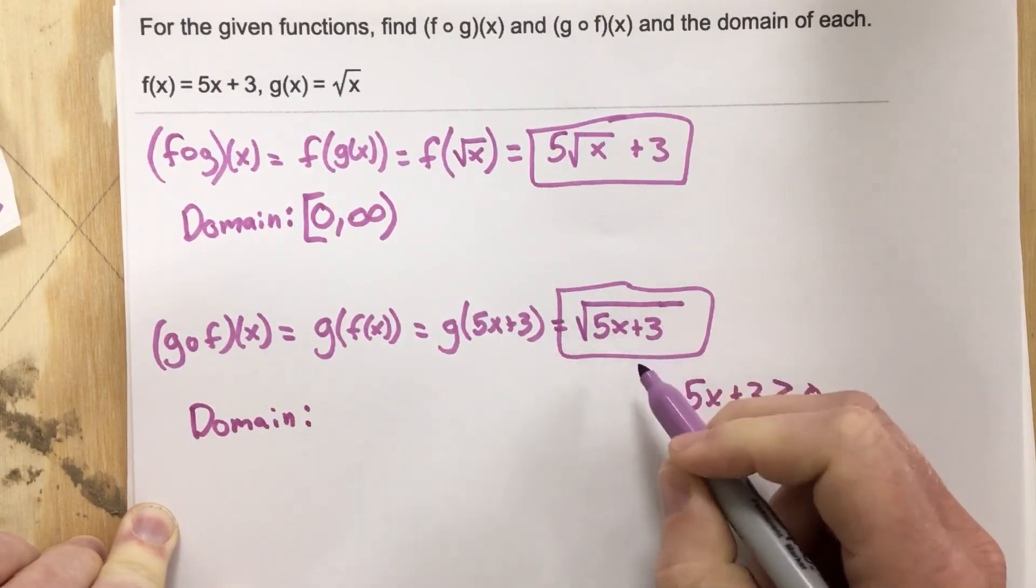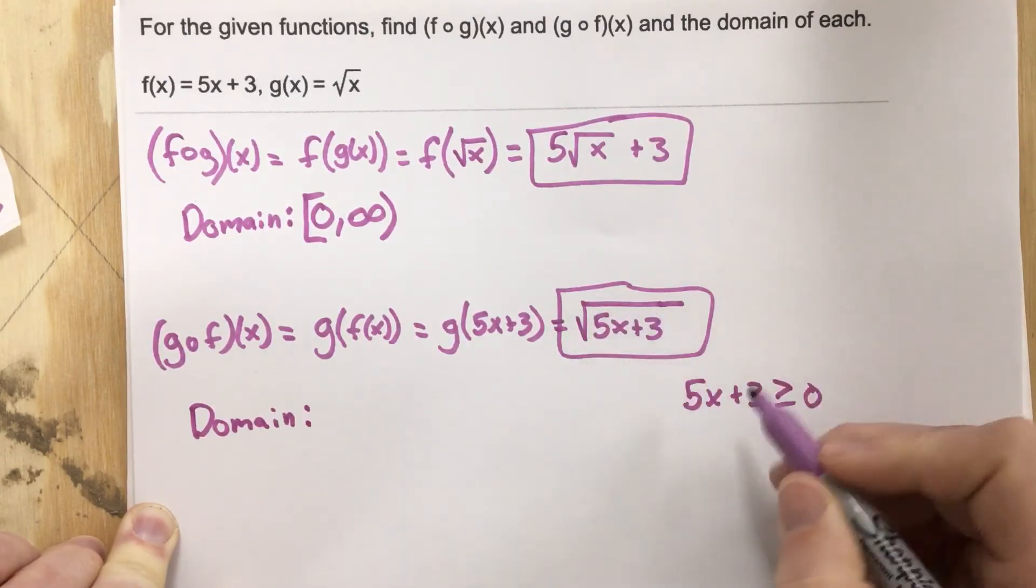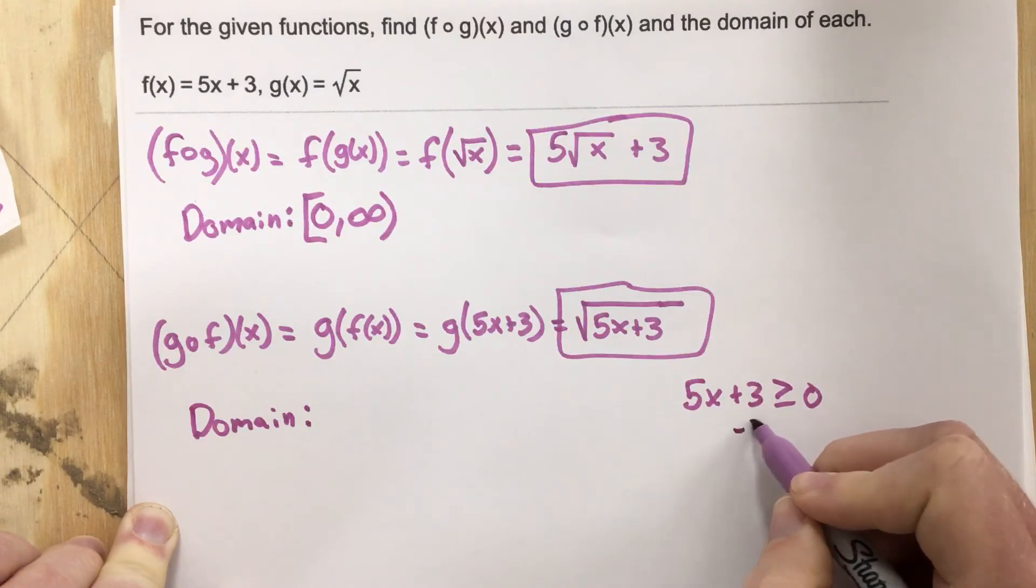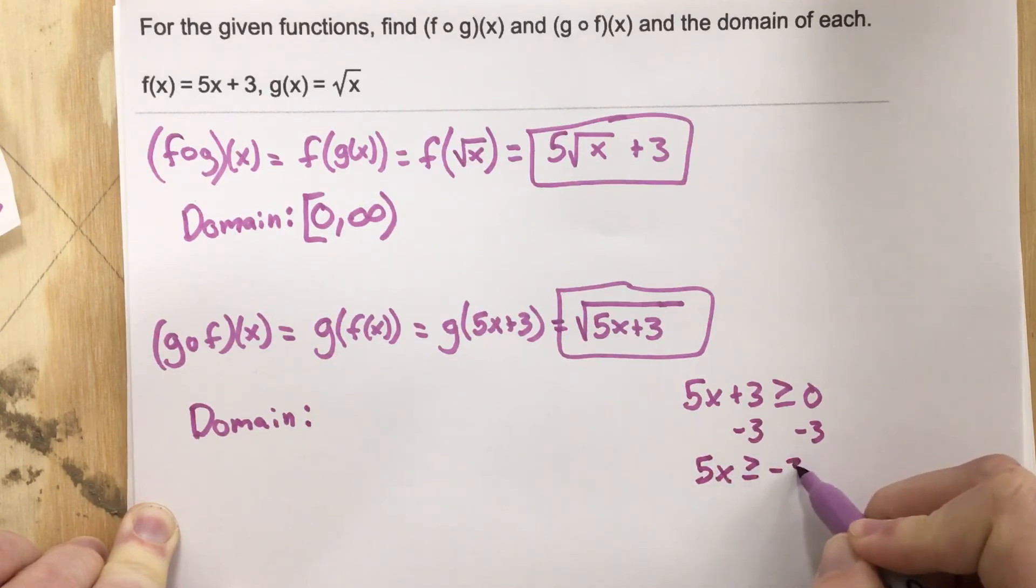The smallest number I can get on the inside of a radical is 0. So I need to figure out what's the smallest number that will give me that. I subtract the 3 over, I get 5x greater than or equal to negative 3. Divide by 5, and x has to be greater than or equal to negative 3 fifths.